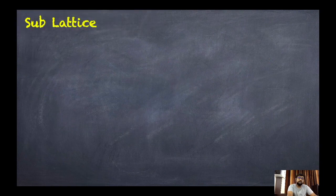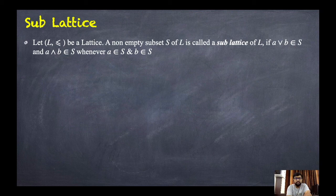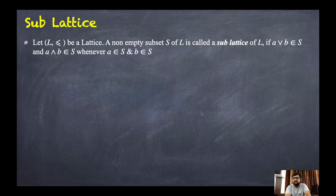Now what is a sublattice? Let (L, ≤) be a lattice. A non-empty subset S of L is called a sublattice of L if a ∨ b belongs to S and a ∧ b belongs to S whenever both a and b belong to S. That means S must be closed under the join (LUB) and meet (GLB) operations.